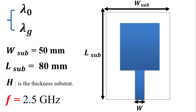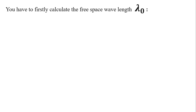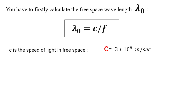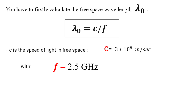To calculate the dimensions in function of lambda zero, we need to find lambda zero first. We use the equation lambda zero equal to the ratio between the speed of light c and the resonance frequency. C equals 3×10⁸ meters per second and our resonance frequency equals 2.5 GHz.